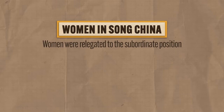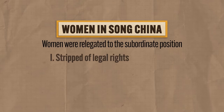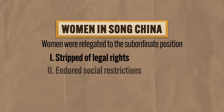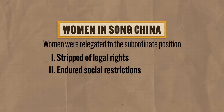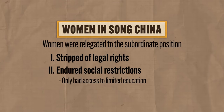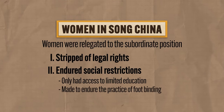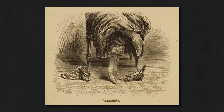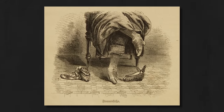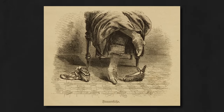Within this Confucian hierarchy, it's important to know about the place of women. With the revival of Confucianism in Song China, women were relegated to a subordinate position. Women were stripped of legal rights and endured social restrictions far more than under previous dynasties. In terms of legal rights, a woman's property became her husband's property, or if she was widowed or divorced, she could not remarry. Women also had limited access to education, and women in more elite circles were made to endure the practice of foot binding, where young girls had their toes bent under their feet and bound with cloth until they broke, meaning they could not walk easily or sometimes at all.